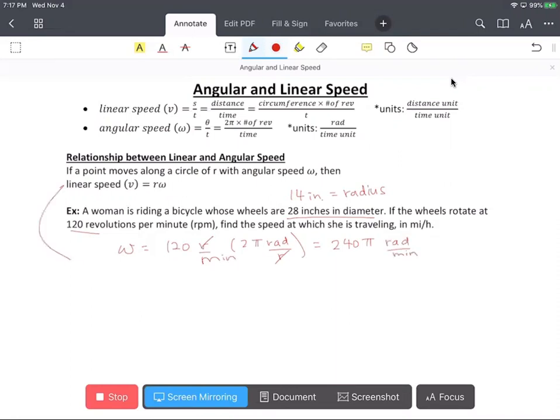We can find our linear speed using the equation above by multiplying our radius, which is 14 inches, and angular speed, which we found to be 240 pi radians per minute. When you multiply this out you get 3360 pi inches per minute.